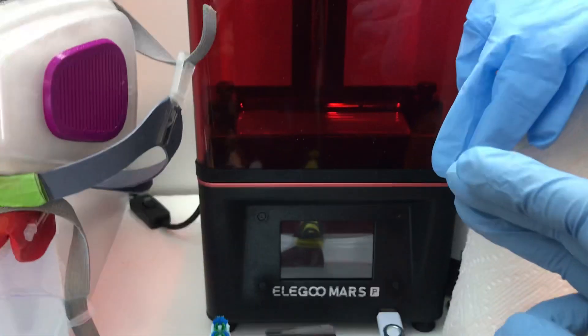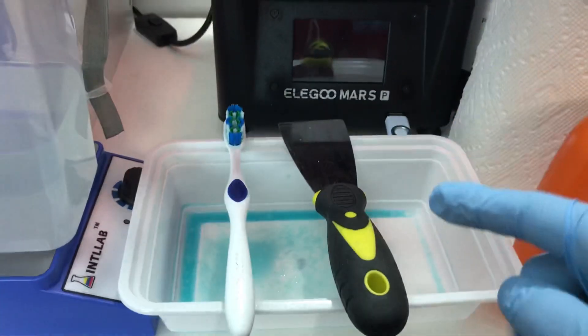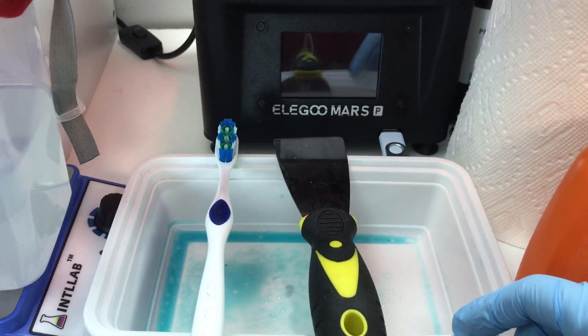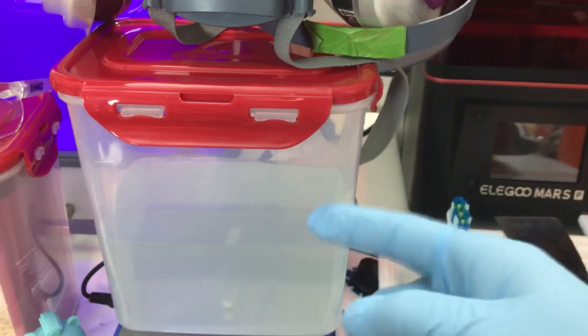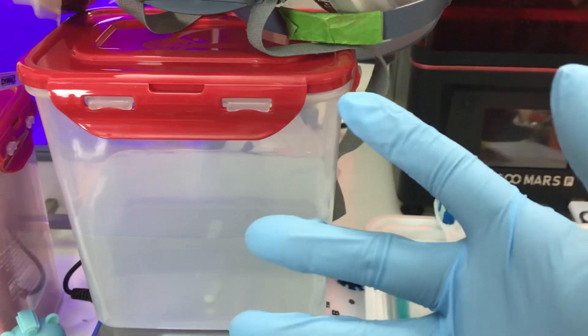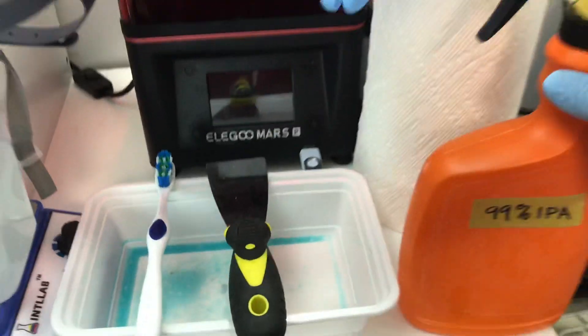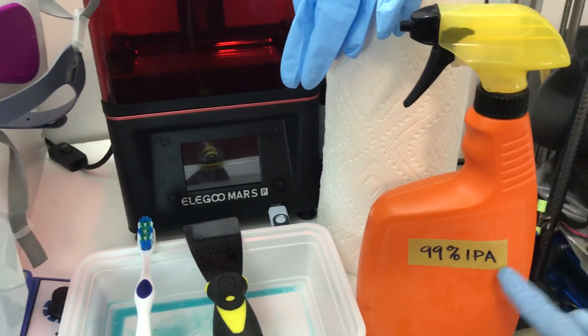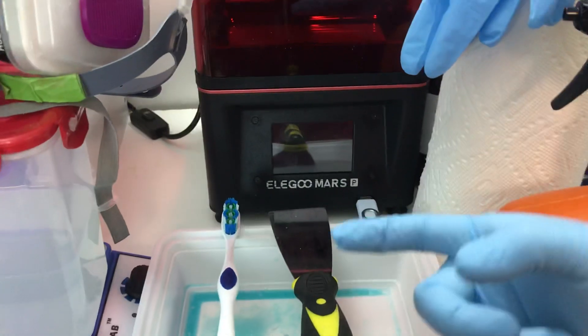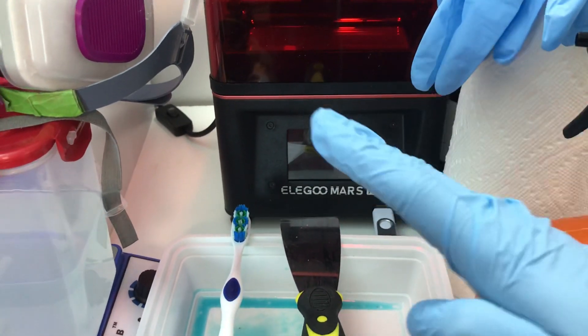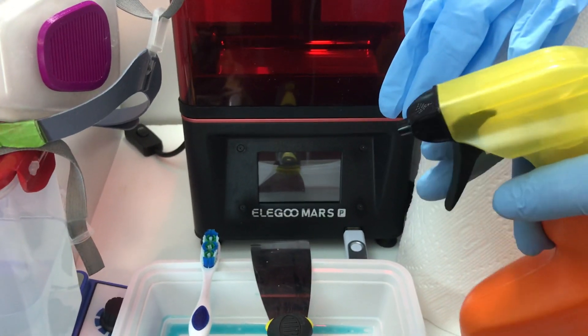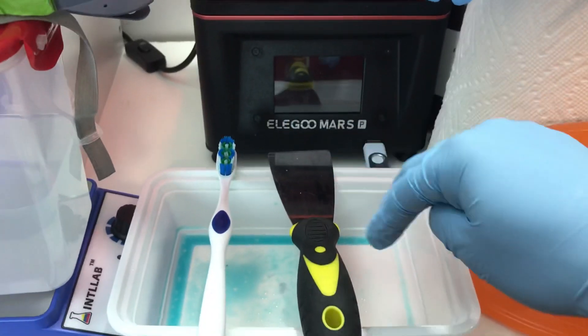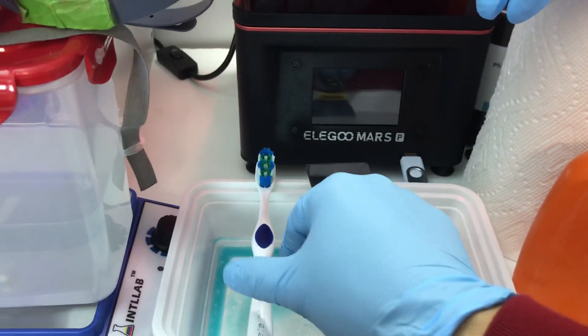The first thing I do is bring it over to this old takeout container. Instead of going right away and dunking it in IPA, which clouds your IPA right away, what I've been doing is taking a spray bottle filled with 99% IPA and spraying the model and bed down. I give it several squirts with the sprayer, and it drips into this tray. Then I give it a scrub with a toothbrush.